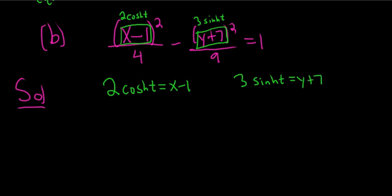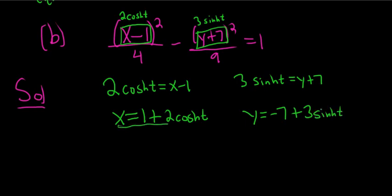You could come up with a formula for this, but just a matter of opinion, I think it's much more beautiful to do it this way. Add 1 to both sides. Here you get x equals 1 plus 2 cosh t, and then subtract 7 over here. So you get y equals negative 7 plus 3 sinh t. And these would be our parametric equations for our hyperbola.